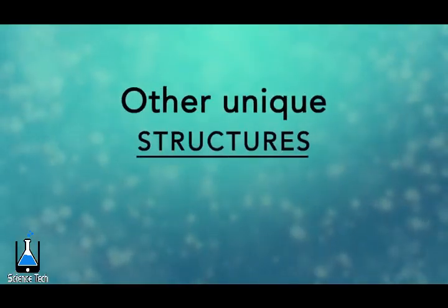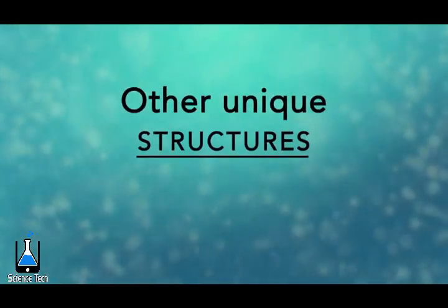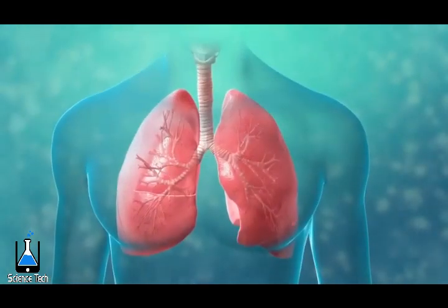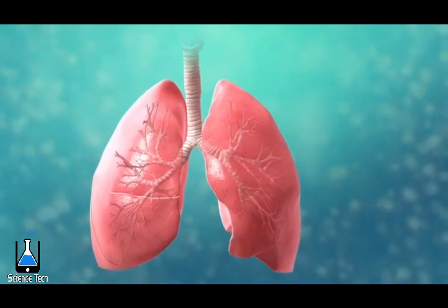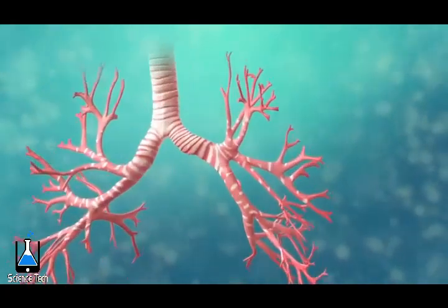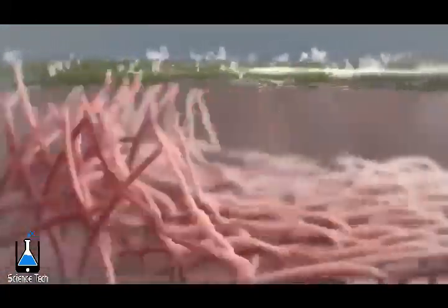There are many other unique structures that only some cells have. Here are just a few. In humans, for example, the respiratory tract is lined with cells that have cilia. These are microscopic, hair-like projections that can move in waves. This feature helps trap inhaled particles in the air and expels them when you cough.